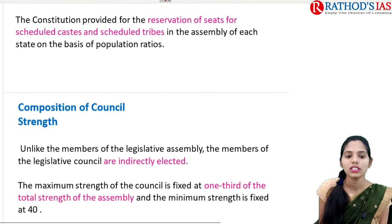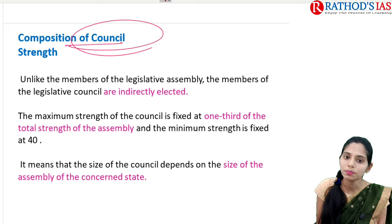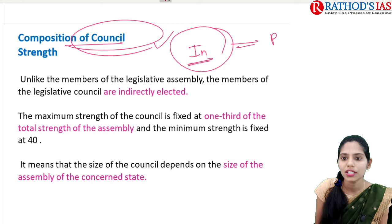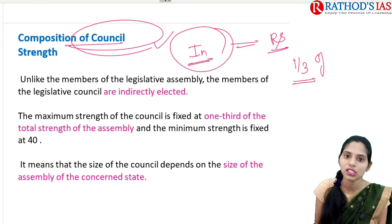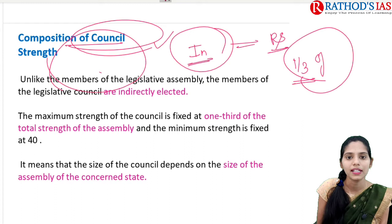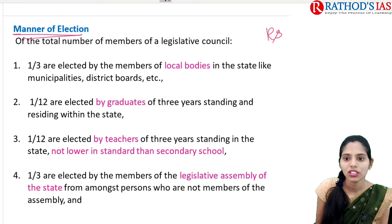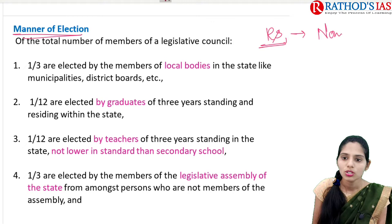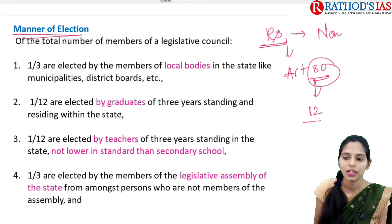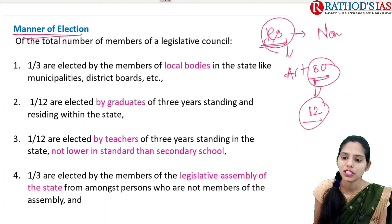Now, the composition of the Legislative Council. Those people are indirectly elected, comparable to the election of members to the Rajya Sabha. The maximum strength is fixed and should not be more than one-third of the total strength of the Legislative Assembly, so the size of the Council depends on the size of the Legislative Assembly. Regarding nominated persons, Article 80 of the Indian Constitution talks about 12 members to be nominated to Rajya Sabha, who should have special knowledge in science, art, literature, and social service.